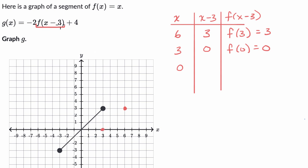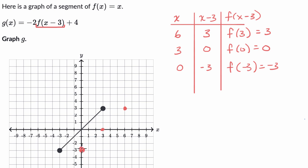You can see that when you subtract a number from within the function — we're not subtracting it from the function, we're subtracting it from x before it's input into the function — it's actually shifting us to the right by three. To verify that, when x is zero, x minus three is negative three, and f of x minus three is the same thing as f of negative three, which is negative three. So this is f of x minus three — it shifted us to the right by three.